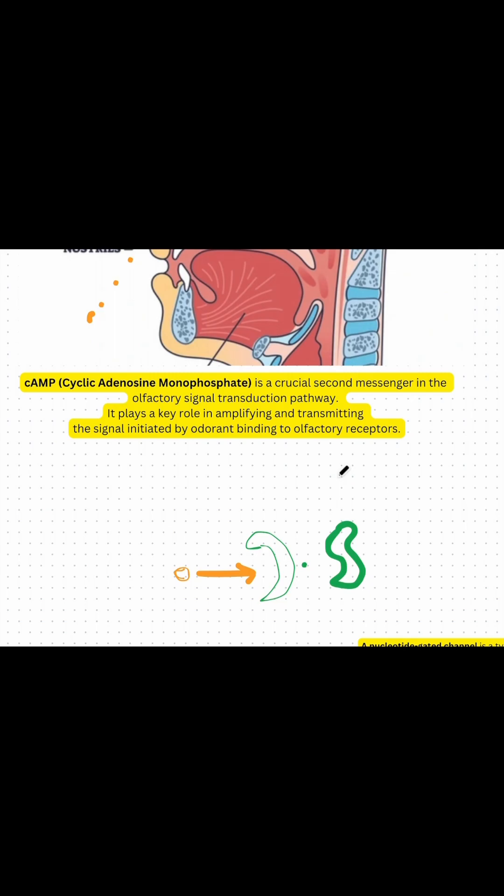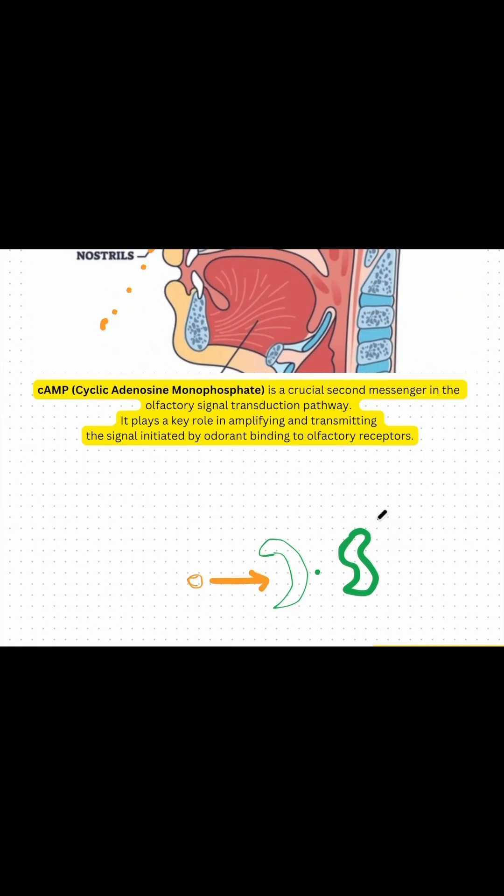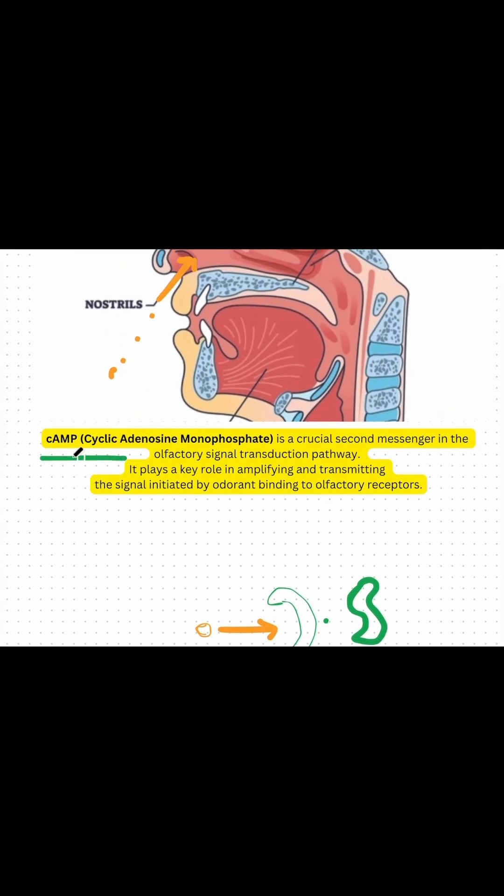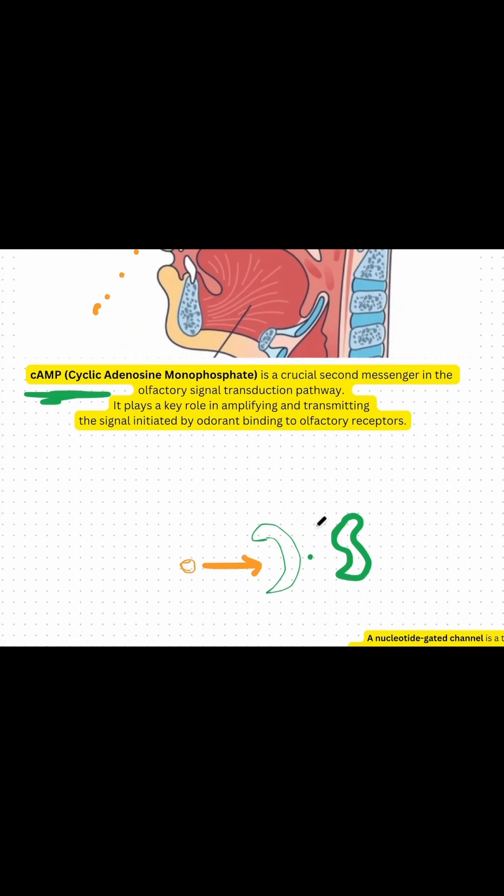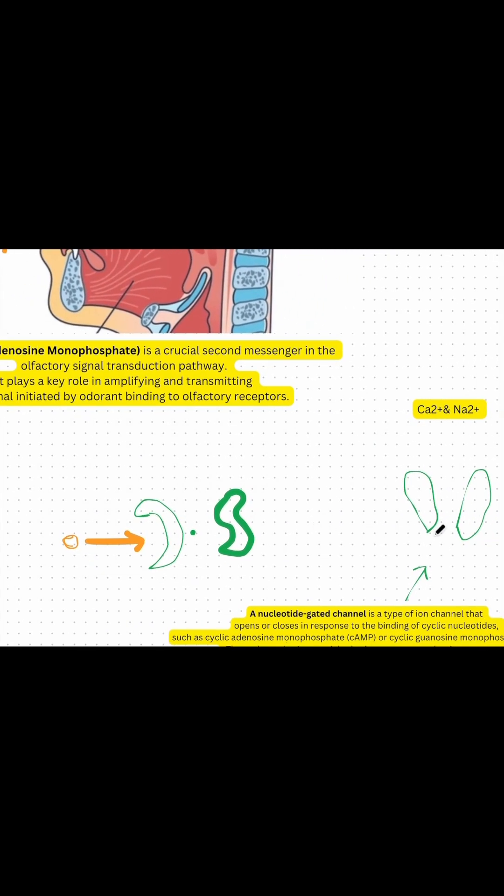This activation leads to an increase in cAMP, which is a crucial secondary messenger in the olfactory signal transduction pathway, playing a key role in amplifying and transmitting the signal initiated by odorant binding to the olfactory receptor.